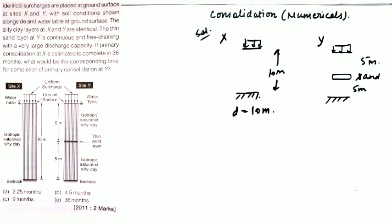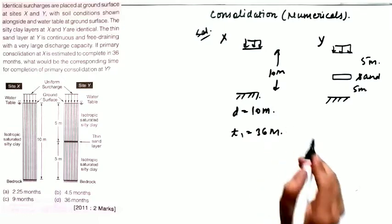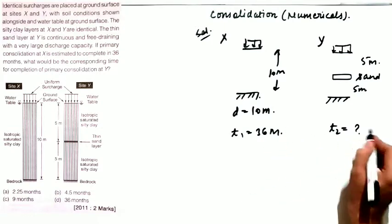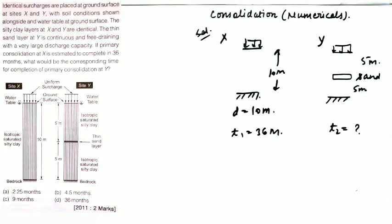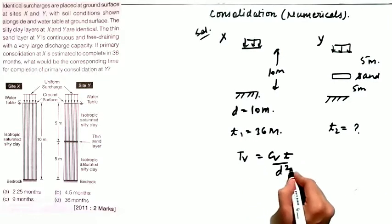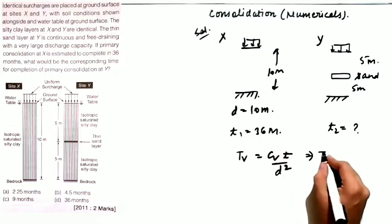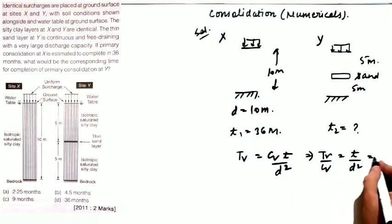You have to determine the time for completion of primary consolidation at Y, given that consolidation at X takes t1 equal to 36 months. The degree of consolidation remains the same — 100% primary consolidation must occur in both cases. So tv will be the same for both cases. Since cv is also equal for both, we get tv/cv equals t/d², which is a constant C. Therefore: t1/d1² equals t2/d2².